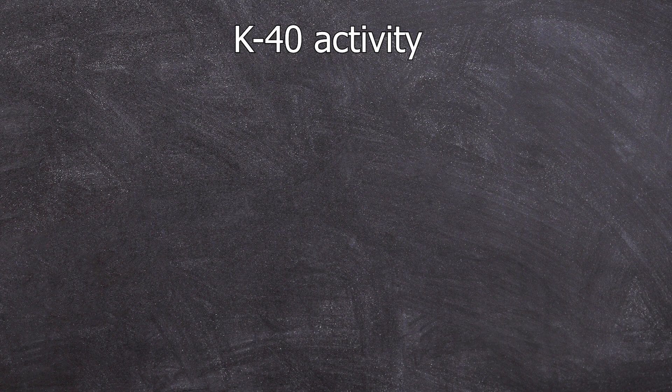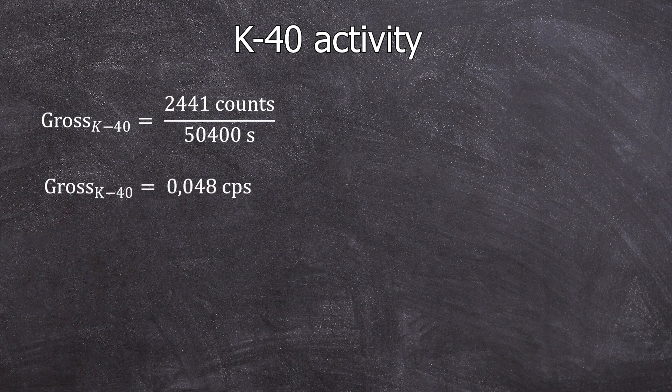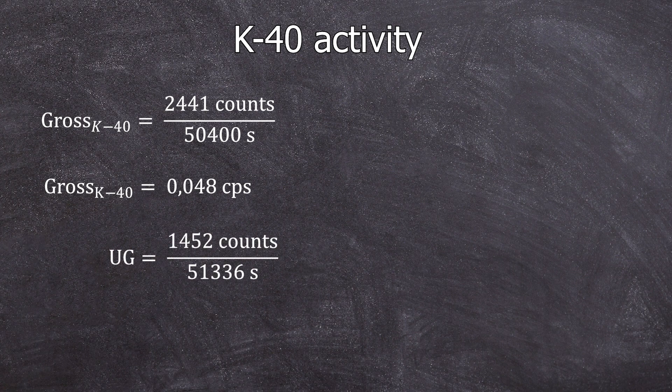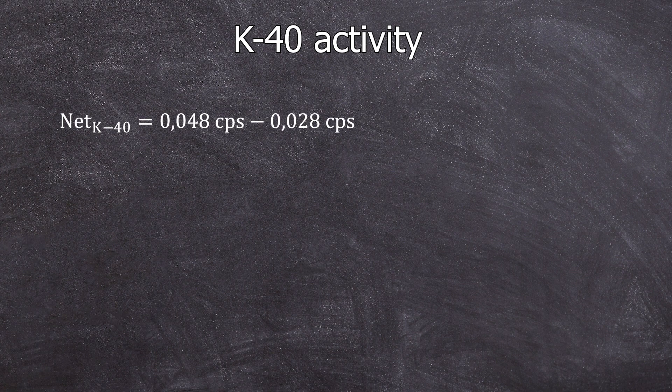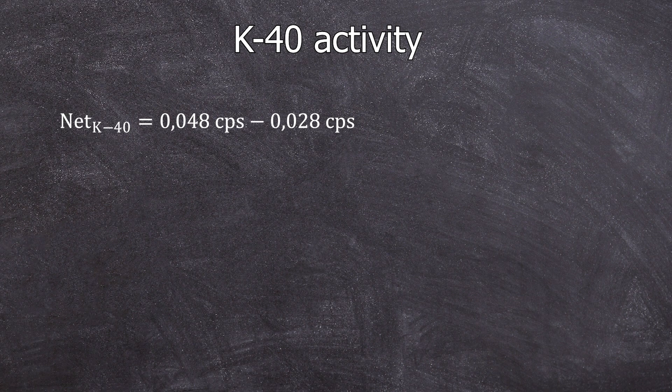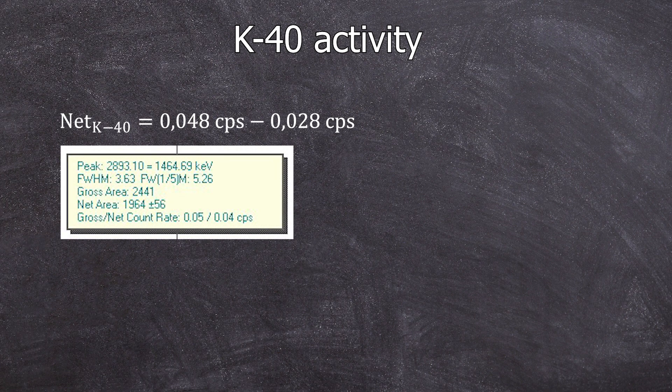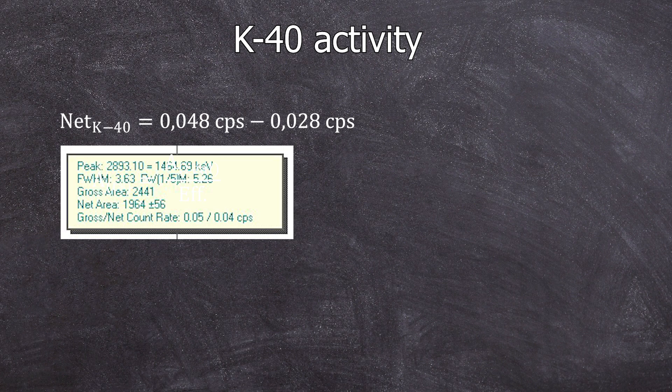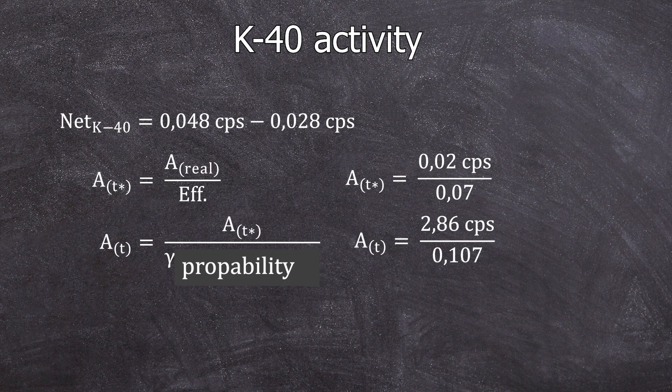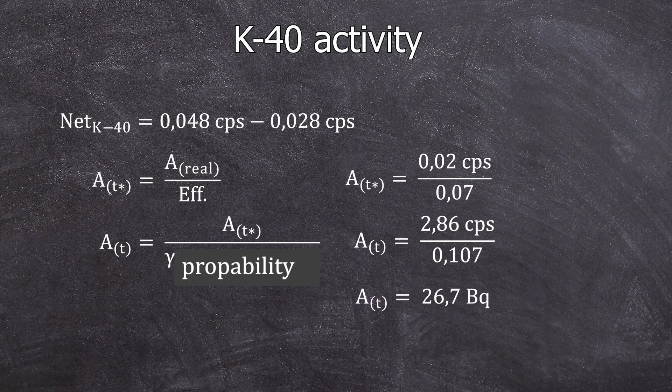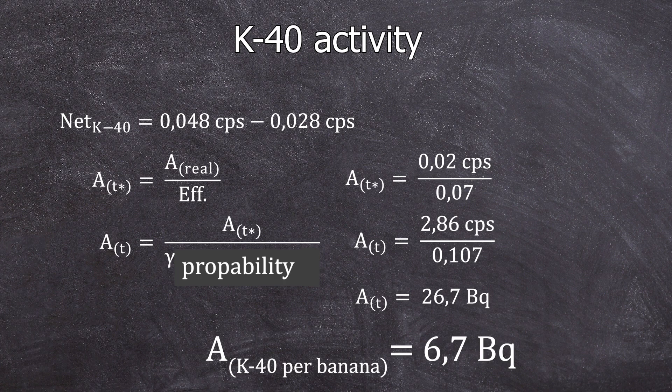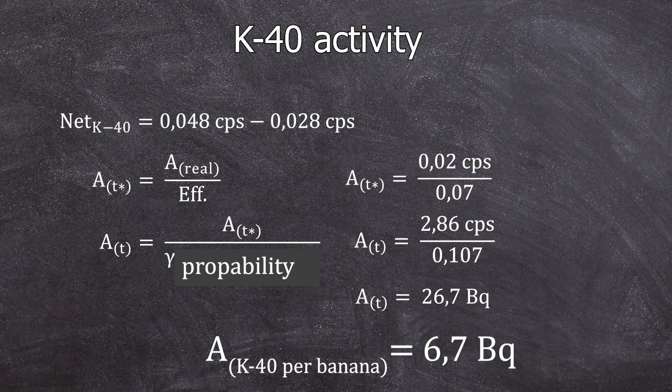Now back to the main focus of the previous video, the potassium-40. The gross CPS of the sample was 0.48 CPS and the background was 0.28 CPS, resulting in a net CPS value of 0.2 and not 0.4 as automatically calculated by the Geely detector. Using this value, we can proceed just like we did with the cesium to obtain a result of 26.8 becquerels, or 6.7 becquerels of potassium-40 per banana. This shows that the cesium-137 content of these bananas is actually very, very low.